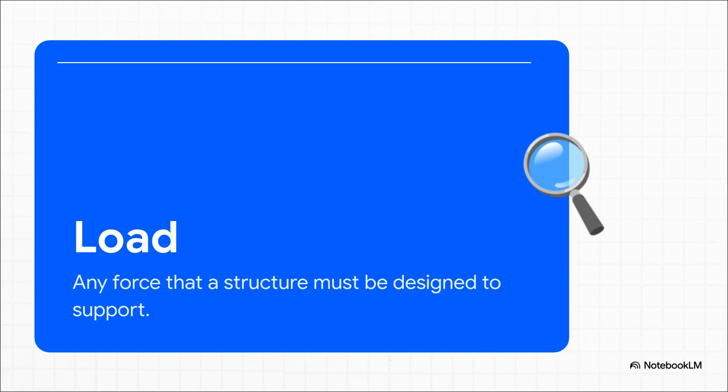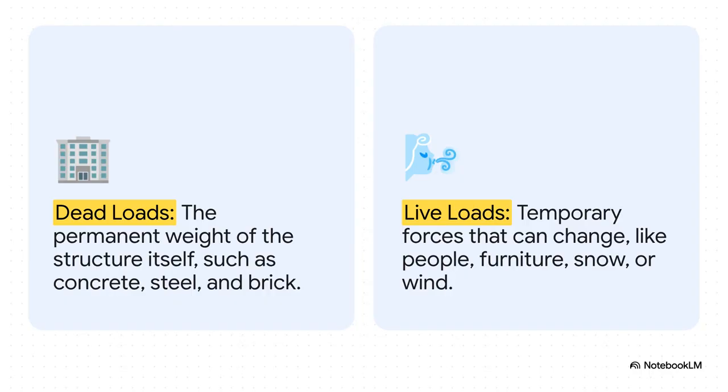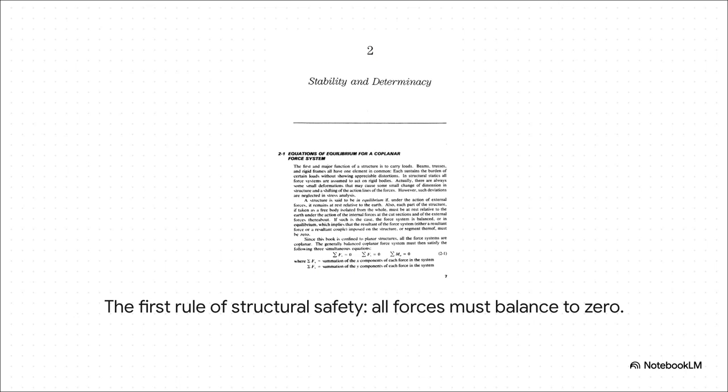Super simple, right? A load is just any force that a structure has to deal with. And these loads, they basically come in two main flavors. You've got your dead loads. Think of this as the structure's own weight. It's the permanent stuff, the steel, the concrete. It's not going anywhere. Then you have live loads. These are the temporary, unpredictable forces. It's us, people walking around. It's snow piling up on a roof or wind slamming into the side of a building. And the whole trick is that the design has to be able to handle the absolute worst case combo of both of those things at the same time.